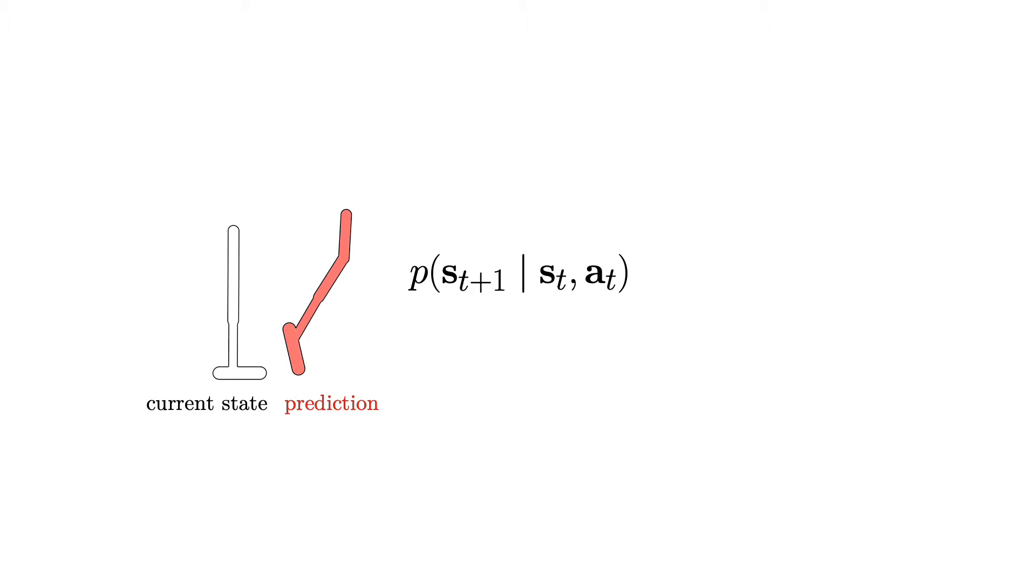The way we turn short-horizon predictions from a dynamics model into long-horizon information is via model-based rollouts, whereby we repeatedly use a model's outputs at the previous step as inputs at the next step.